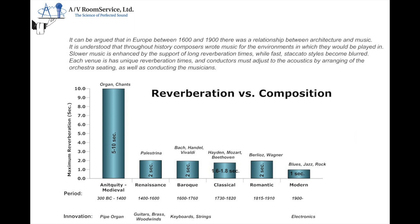So is reverberation friend or foe? In a performance venue, it would be friend. In this chart, we can see that especially back in medieval times, when all they had was stone to work with, and they had organ and chants. Because of the fact that the large cavernous rock stone buildings did not bode well for anything that was percussive or staccato or transient by any means, but was beautiful for organ and chants — things with long sustaining notes that supported it and made it richer and fuller and gorgeous.